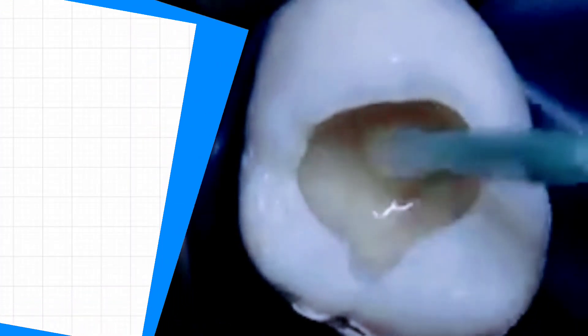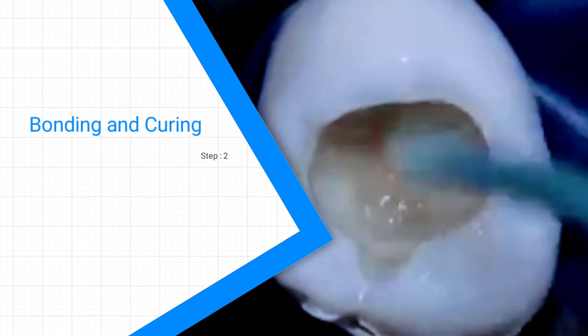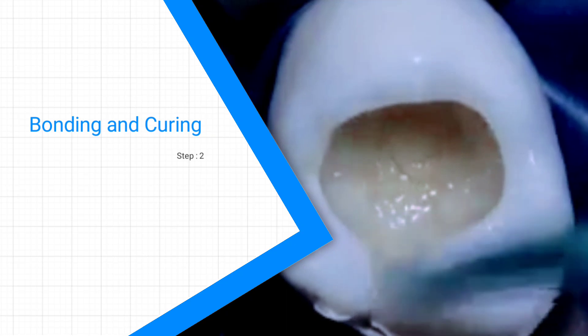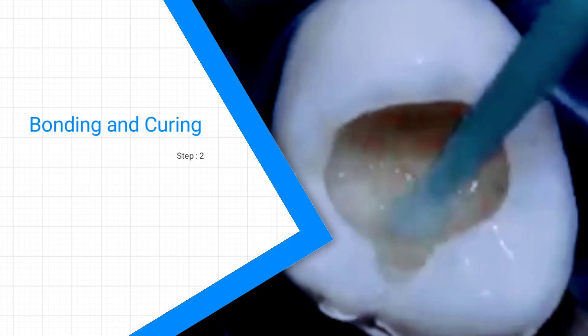With the applicator, dab a small amount of bonding agent on the etched surface, and then blow some air over the bonding agent to ensure that the layer is thin and even.